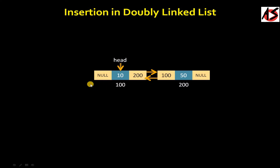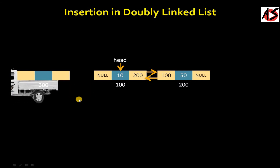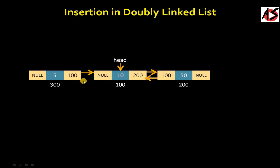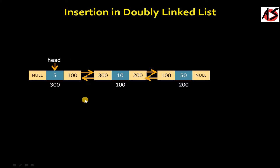Here we have a list with the first node that is pointed by the head. Now if you want to insert the node from the front, you take one empty node and set the left pointer null because it is the first node. Then you set the data part — 5 here — and the new node's right pointer indicates the head node, while the head node's left pointer indicates the new node. Don't forget to drag the head pointer to the first node.